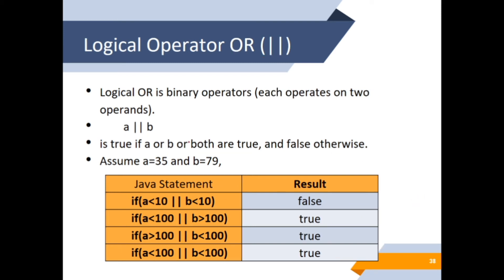The second logical operator is OR (||). A or B is true if A, B, or both are true. Assume A is 35 and B is 79. If A < 10 || B < 10: both false, result is False. If A < 100 || B > 100: one is true, so the result is True. If A > 100 || B < 100: one is true, so the result is True. If A < 100 || B < 100: both are true, so the result is True.